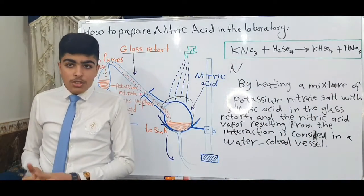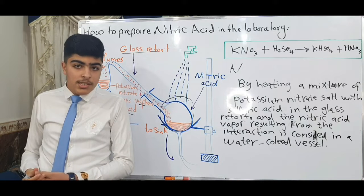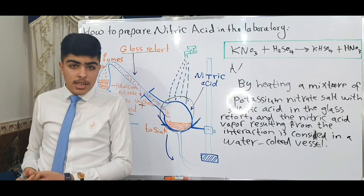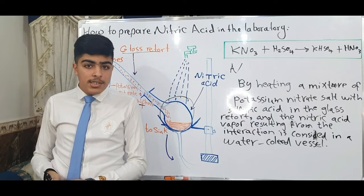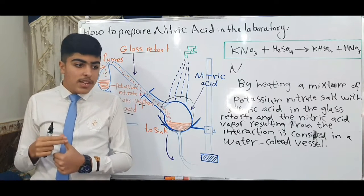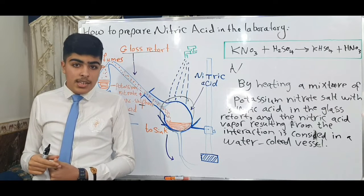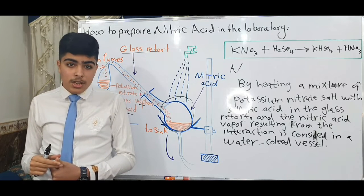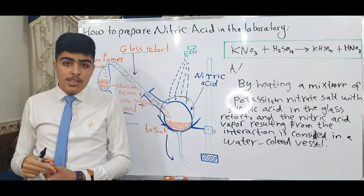And I'm going to talk about the properties of nitric acid. The properties of nitric acid is five points. The first one: pure acid is colorless. This is number one.